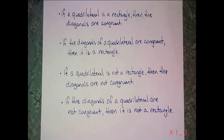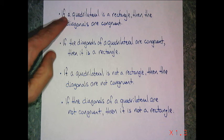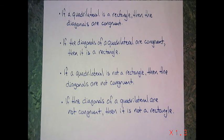Now I am going to move on and talk about four conditional statements that are kind of related to each other. The first conditional statement is, if a quadrilateral is a rectangle, then the diagonals are congruent.